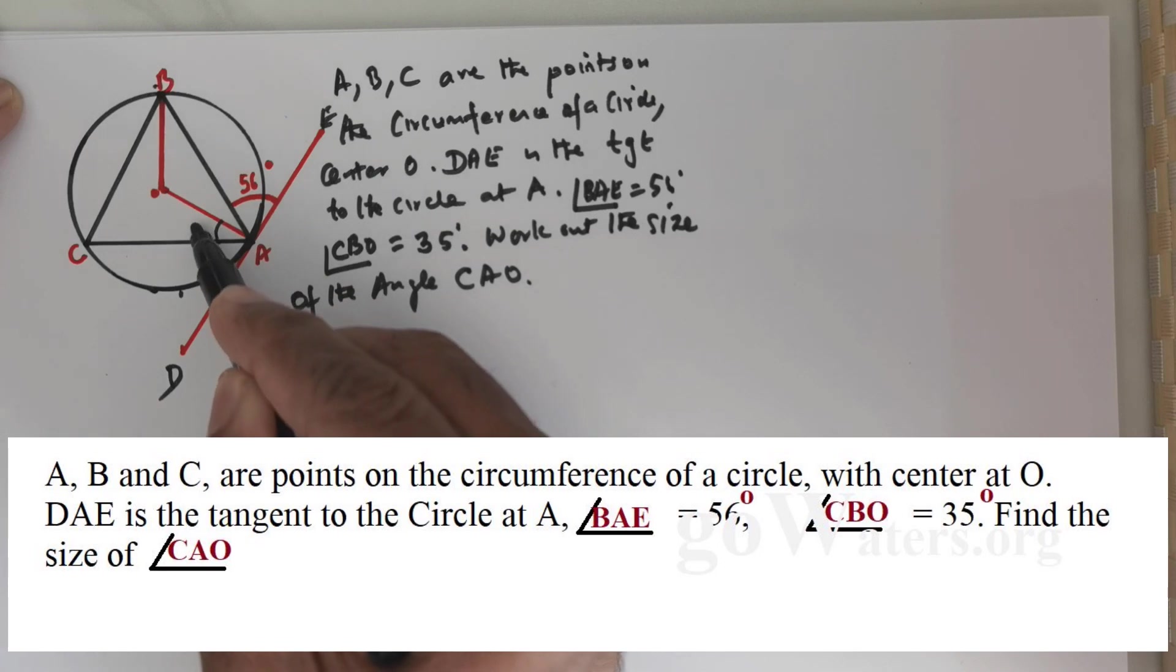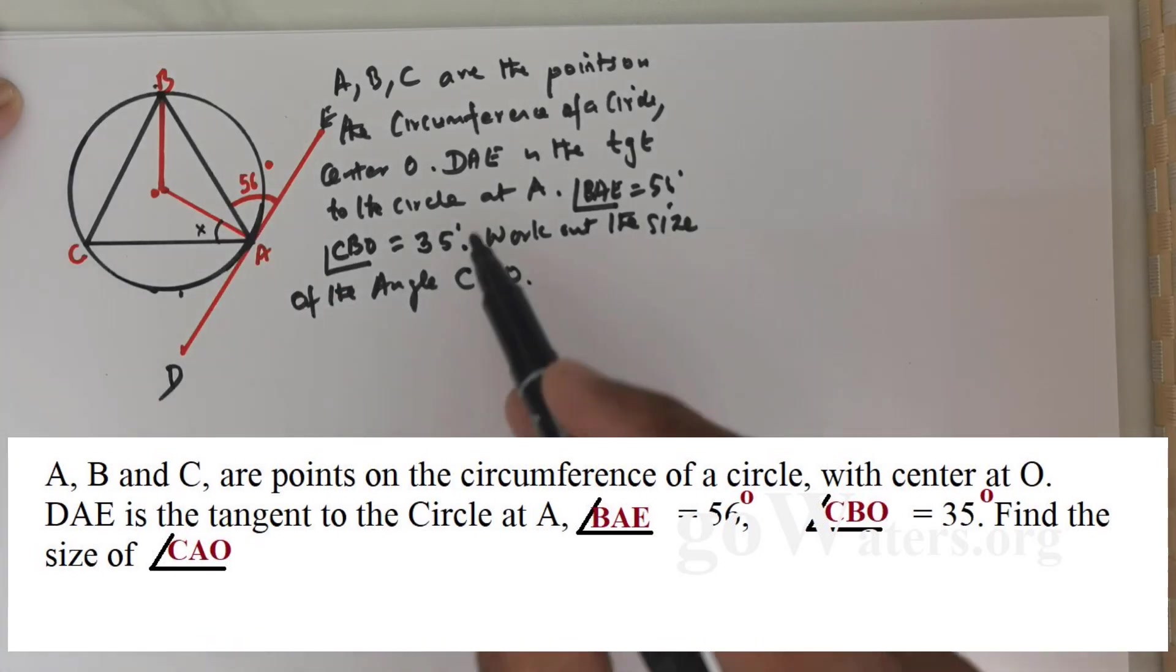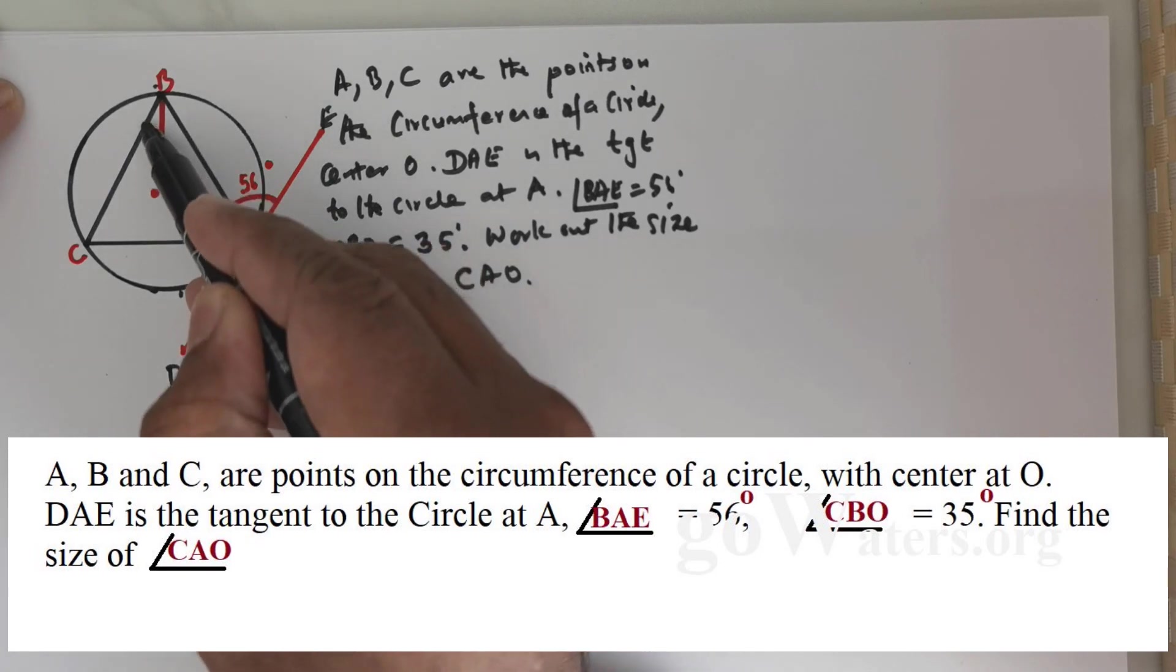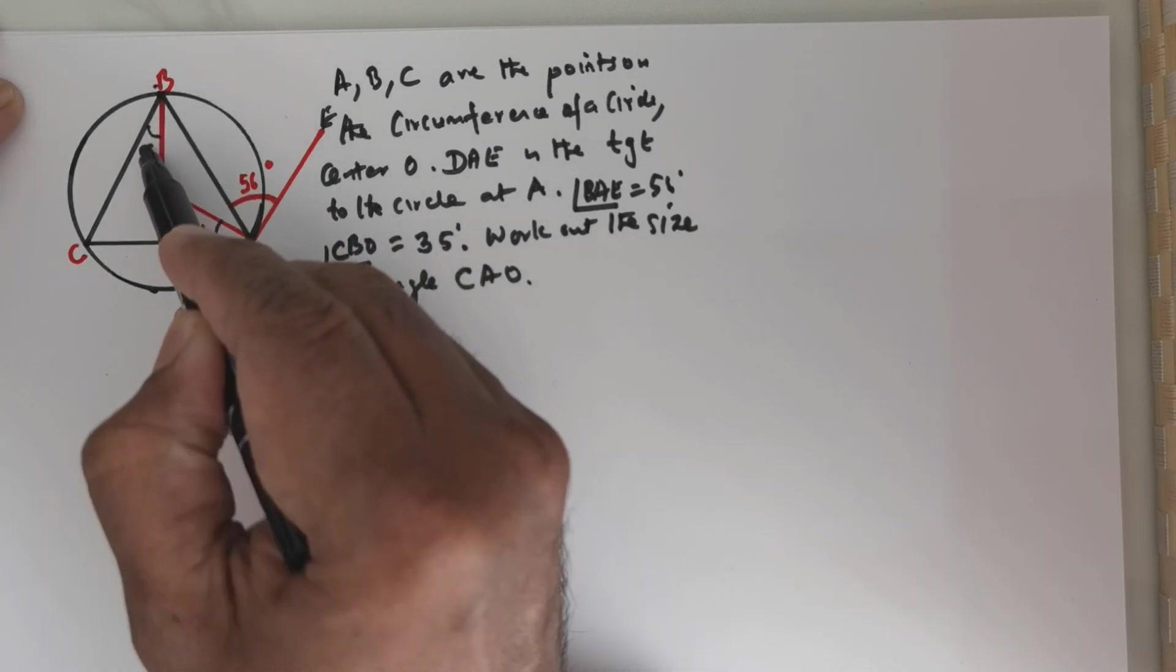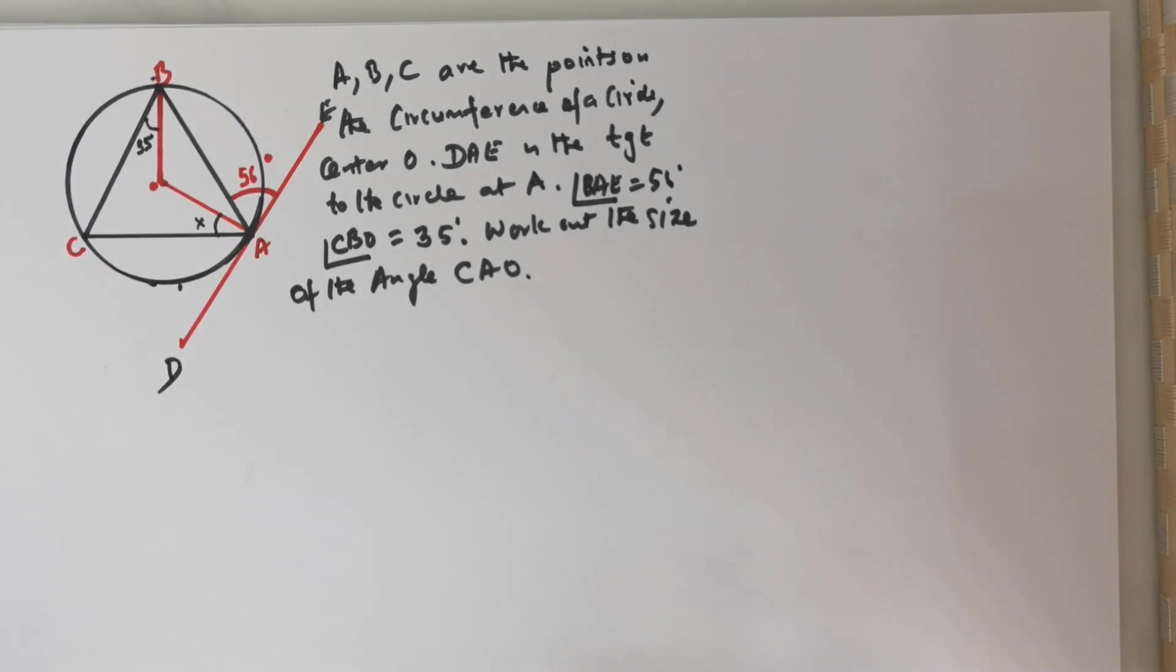And then CBO is 35 degrees. So this is 35. Let's get the solution.